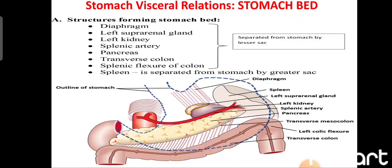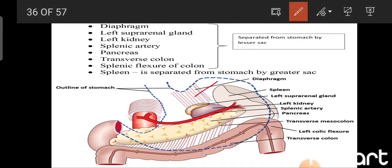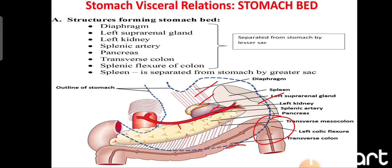The visceral relations lie on the posterior aspect of the stomach and form the stomach bed — an important examination topic. The structures forming the stomach bed are: the diaphragm and left crus of the diaphragm, the left suprarenal gland, the left kidney, the spleen, the splenic artery, the pancreas, the transverse colon, the splenic flexure of the transverse colon, and the transverse mesocolon.